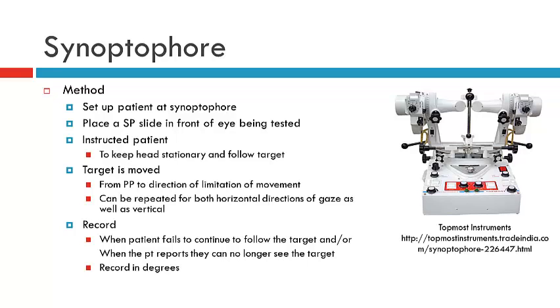You could observe the eye, and in this instance, it's easier to observe the eye than it is with the perimeter. The patient can tell you when the image becomes blurry. Remember to record in this instance in degrees. You've got two options when using the synoptophore to measure in prism diopters or degrees, and for field of uniocular fixation, you should always record using degrees.